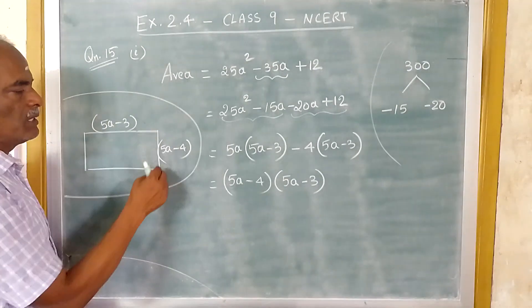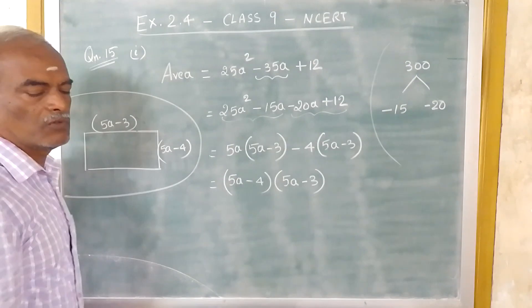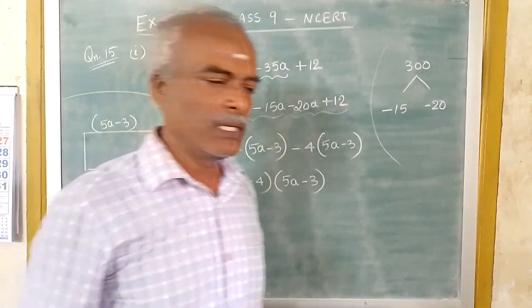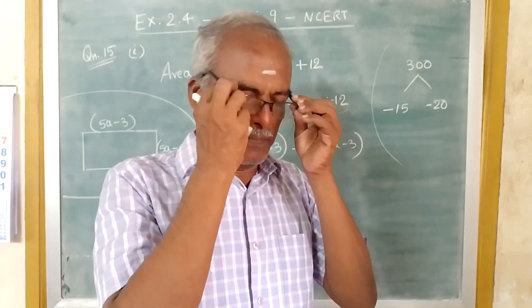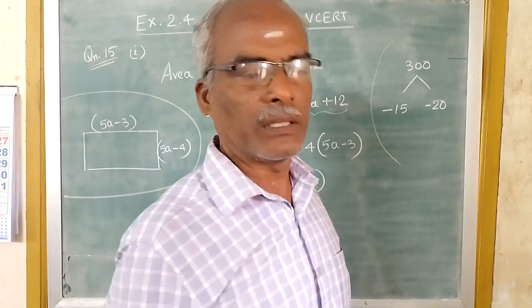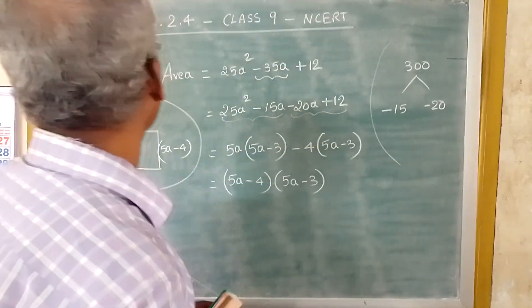Therefore the length is 5A minus 3 and the breadth is 5A minus 4. So when you multiply these two, you will get this. So that will be the area of the given rectangle. Now we have found out the length and breadth. The second problem is...